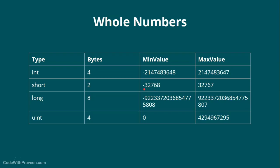In the case of short, it can store only from minus 32,768 to 32,767. Since long takes twice the bytes compared to integer, its range of values is quite large. Finally, unsigned int, shortly referred to as uint, takes the same number of bytes as integer. The key difference is that integer can take negative as well as positive values, whereas unsigned int, as the name tells, accepts only positive values. That's why the minimum value is zero and the maximum is twice that of integer.